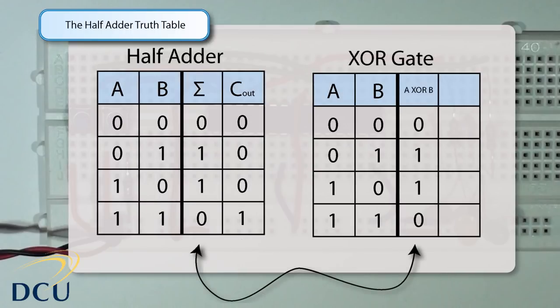If we now examine the sum column of the half adder: 0,0 gives output 0; 0,1 gives output 1; 1,0 gives output 1; and 1,1 gives output 0. When the inputs are different we get an output of 1, and when the inputs are the same we get an output of 0. This is exactly the same as the exclusive OR gate truth table, which means we can model the sum component of the half adder using a single two-input exclusive OR gate.